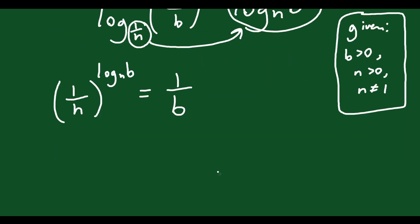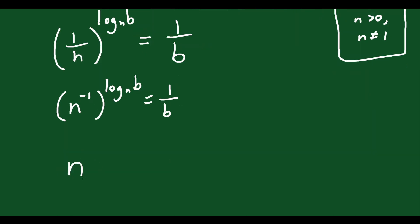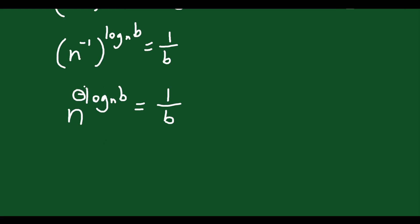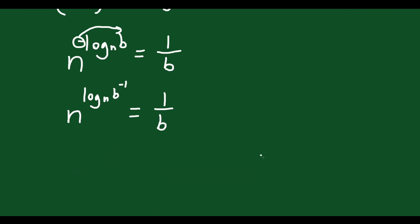That becomes n to the exponent negative log_n(b) equals 1/b. You can take that negative on the front of the log and move it into the exponent on b — that's the power rule. So you get n to the exponent log_n(b^(-1)) equals 1/b. Now recall the logarithmic rule that a number to the exponent of log base that number of a quantity — those things cancel.